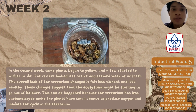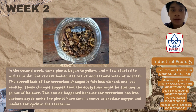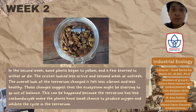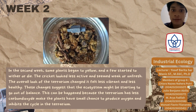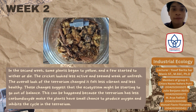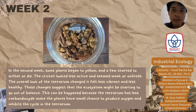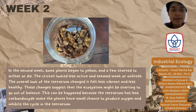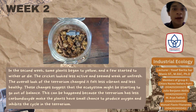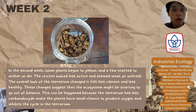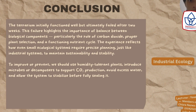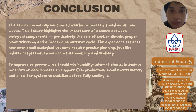In the second week, some plants began to yellow and a few started to wither or die. The cricket looked less active and seemed weak. The overall look of the terrarium changed — it felt less vibrant and less healthy. This change suggests the ecosystem was starting to go out of balance. The terrarium worked at first but failed after 2 weeks, showing the need for a balance of CO2, plant choice, and nutrient cycling. Like industrial systems, small ecosystems need careful planning. Next time, use suitable plants, add microbes, and allow the system to stabilize before sealing.